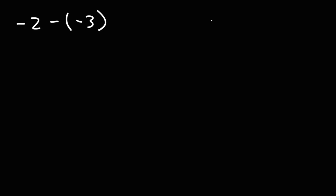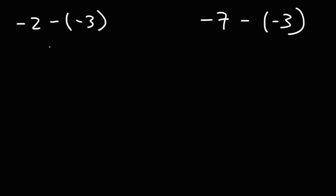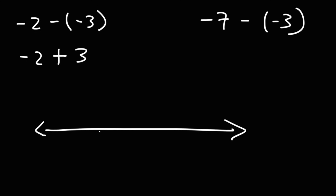Let's try two more: negative 2 minus negative 3, and negative 7 minus negative 3. A negative times a negative is a positive, so this is the same as negative 2 plus 3. Using a number line we'll start with negative 2 and add 3 to it, traveling 3 units to the right: 1, 2, 3 — that's negative 1, 0, and 1. So negative 2 plus 3 is positive 1.